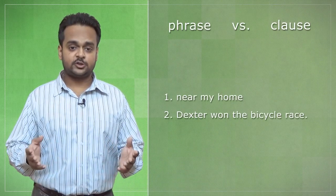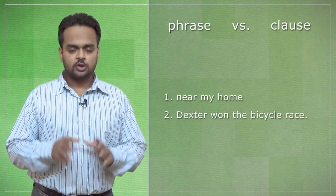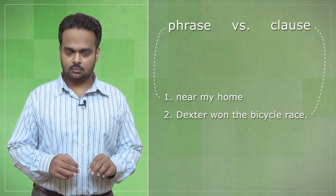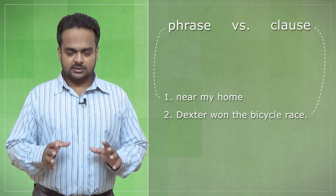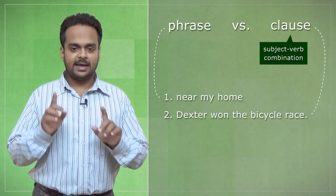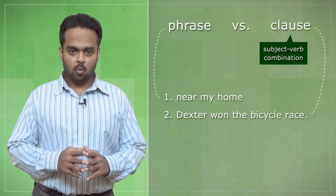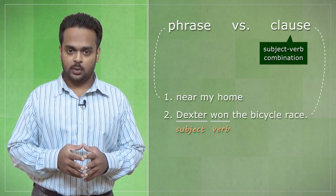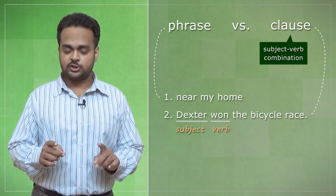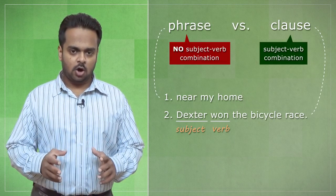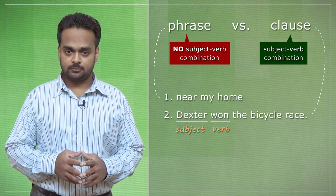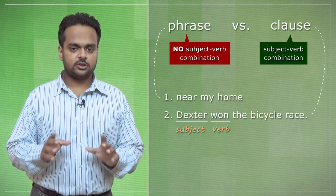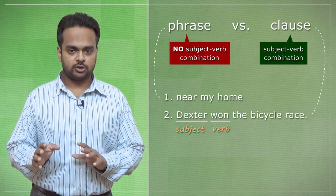They're similar in this way — both refer to groups of words that are meaningful. Look at these examples: 'near my home' or 'Dexter won the bicycle race.' You can see that these are meaningful. One is a phrase and the other is a clause. The difference is this: a clause is a group of words with a subject-verb combination. So 'Dexter won the bicycle race' is a clause because it has a subject and a verb. A phrase is a group of words without a subject-verb combination, so 'near my home' is a phrase. A clause has a subject-verb combination and a phrase does not.